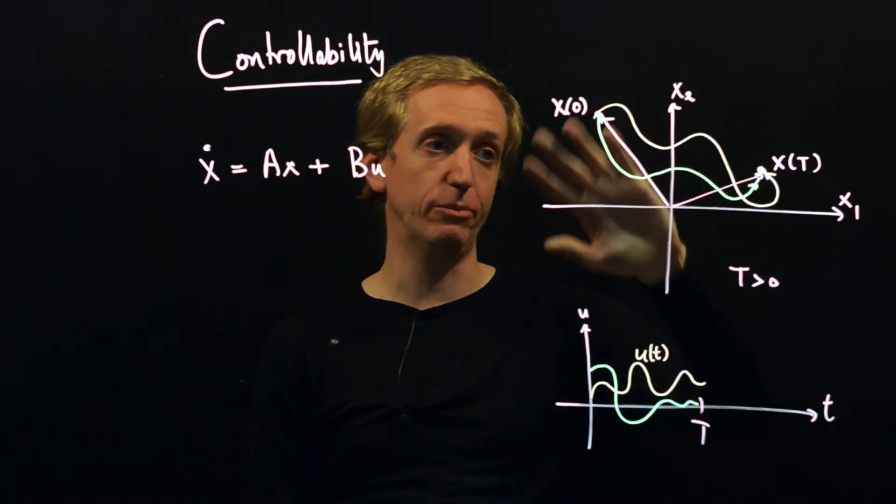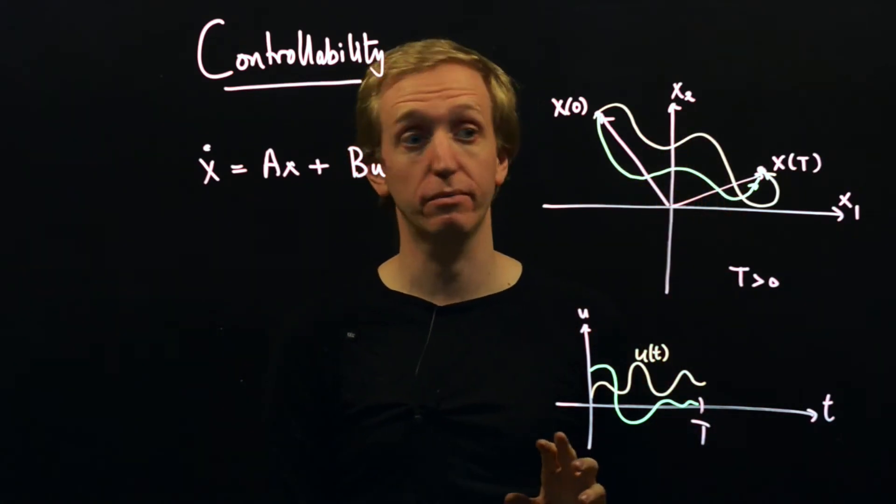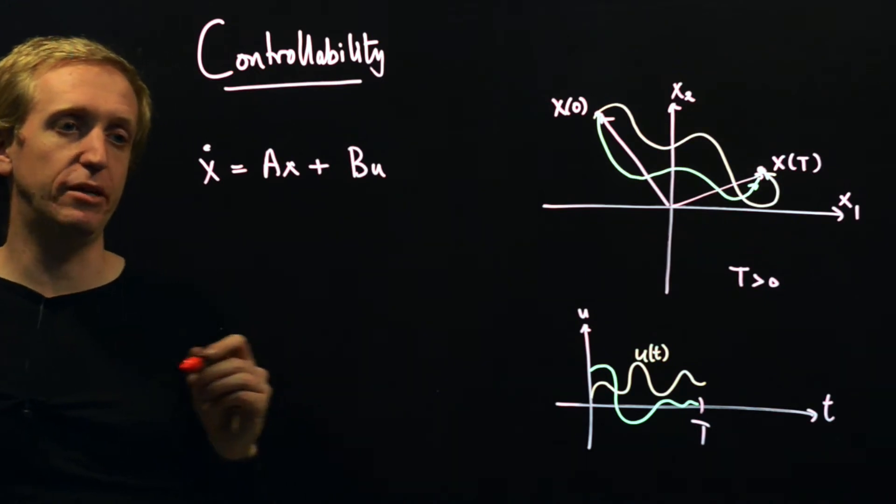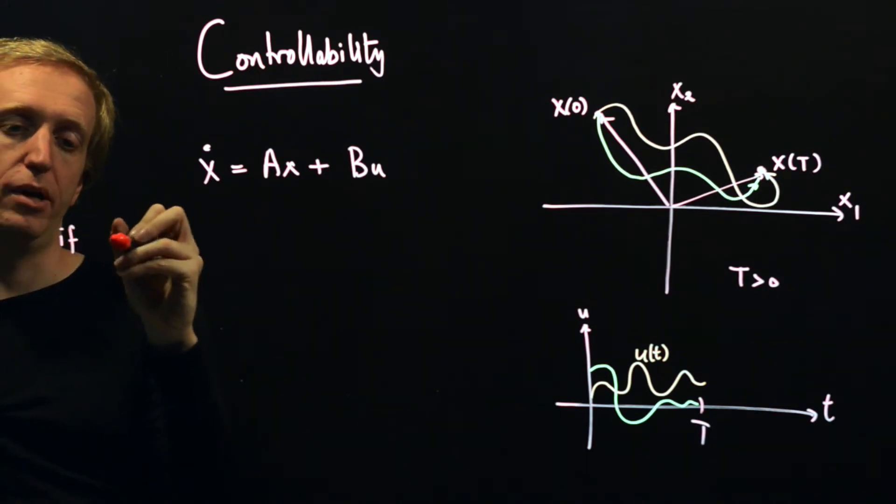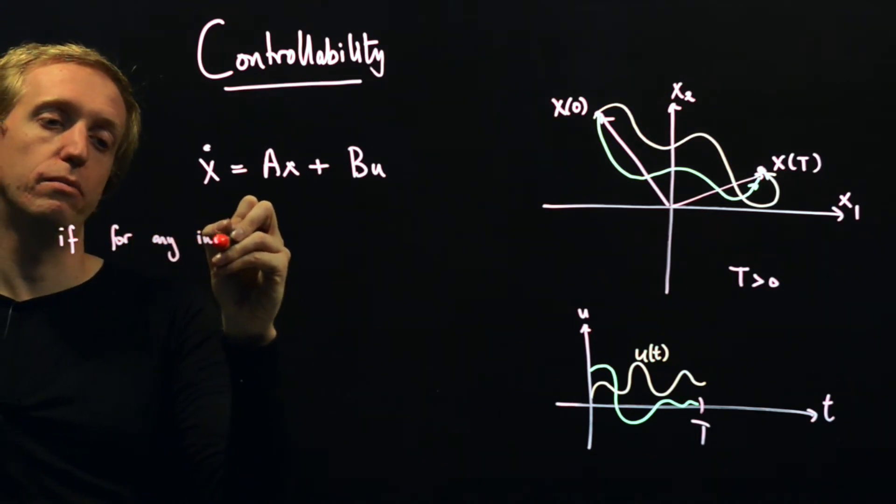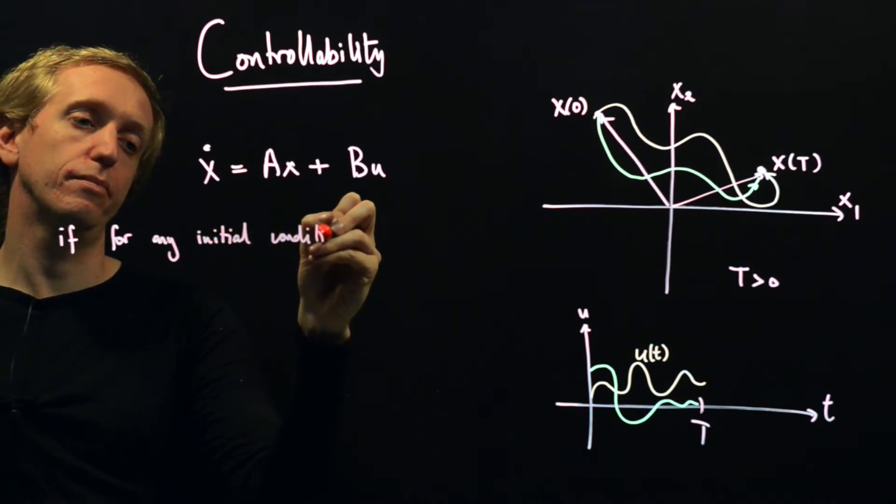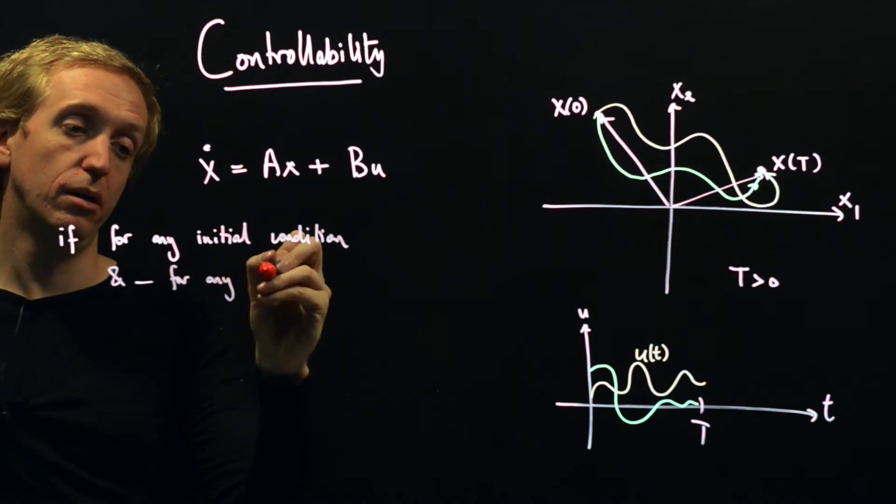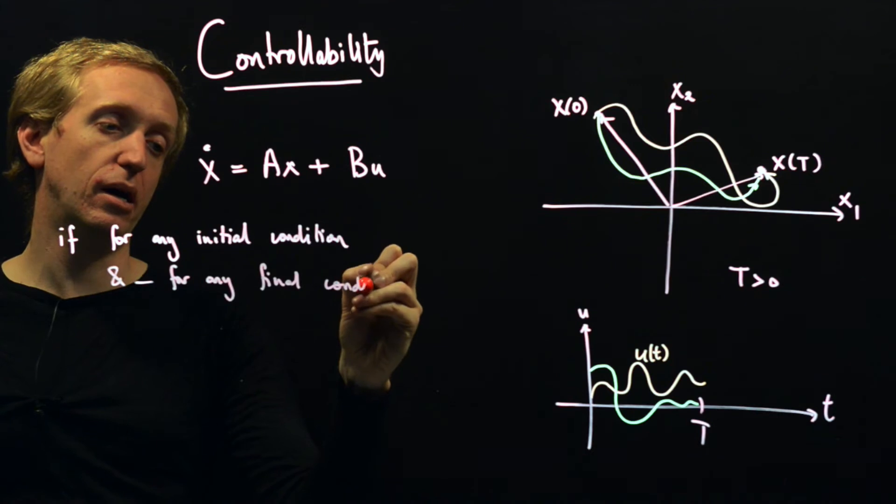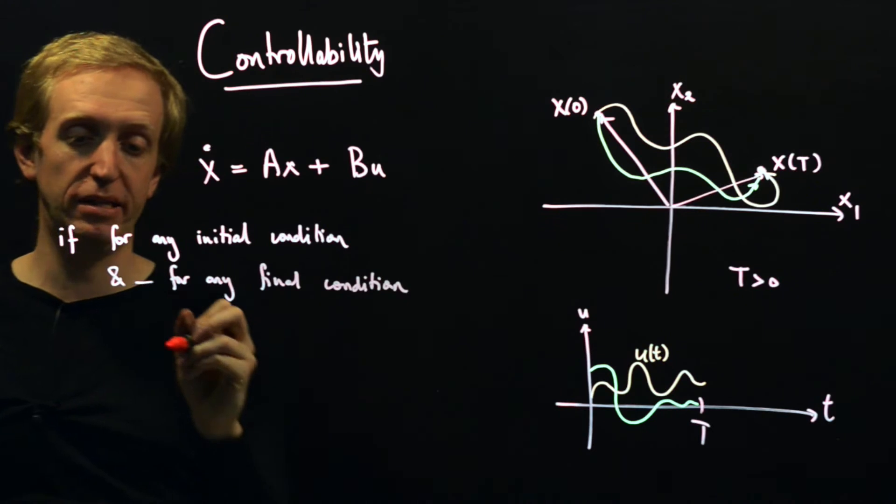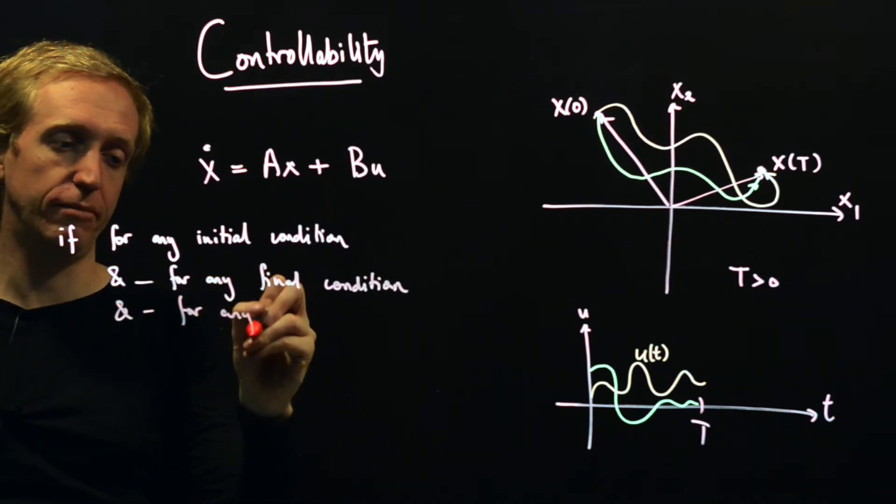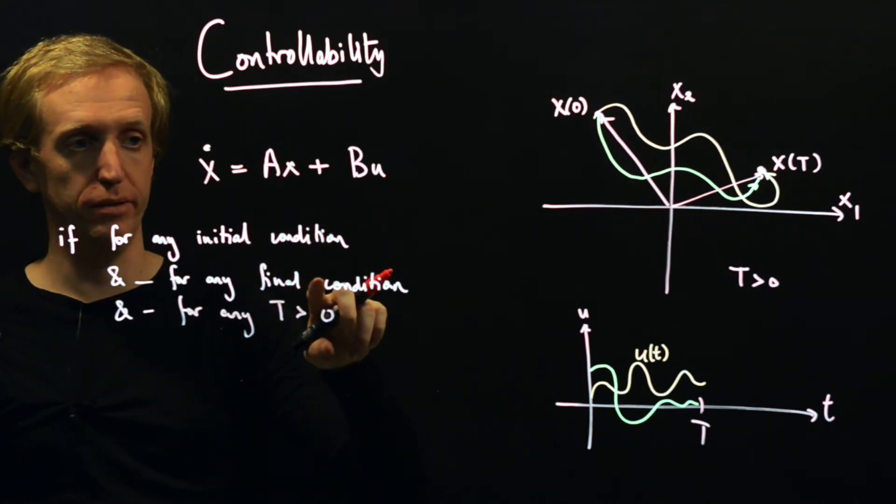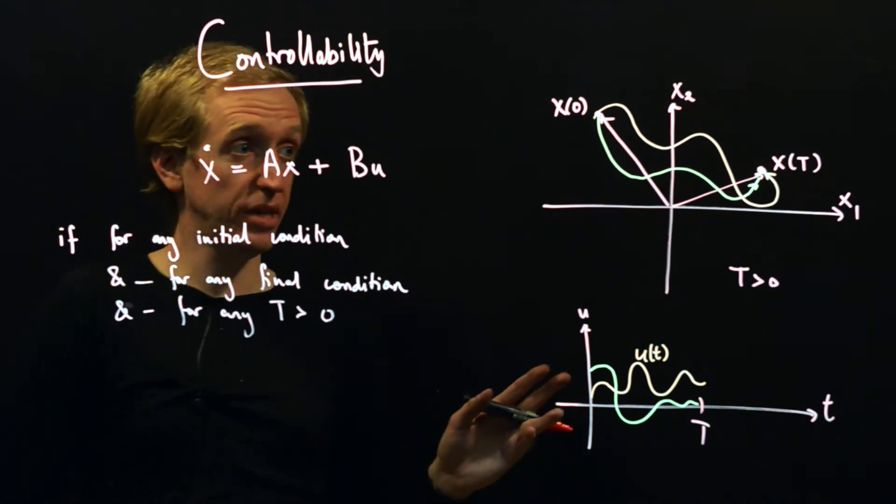And it also says nothing about whether I will stay there. There's no guarantees on being able to make any point in our state space into an equilibrium point, for example. It's just saying can we get there. So the system is said to be controllable if for any initial condition and for any final condition, this means any final point in the state space, and for any time greater than zero, there exists some control input that will take us from that initial condition and deposit us in that final condition. That's what controllability means.